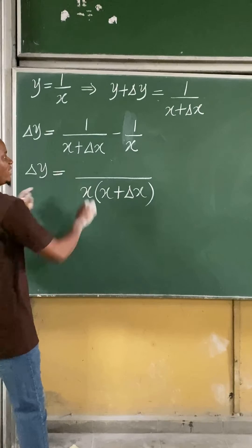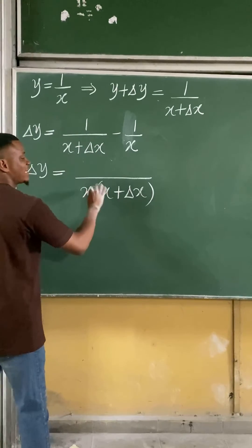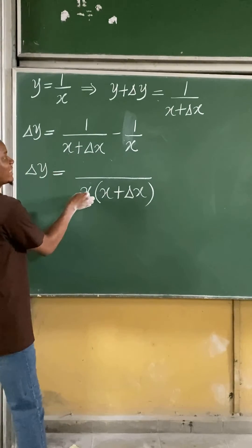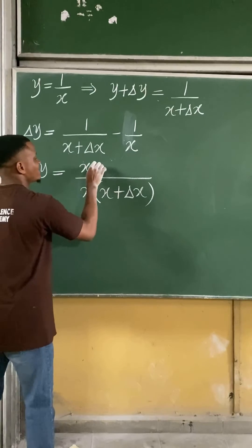Divide this by this. From here, x plus change in x will cancel x plus change in x. I'm left with just x. x times 1 gives you x minus.